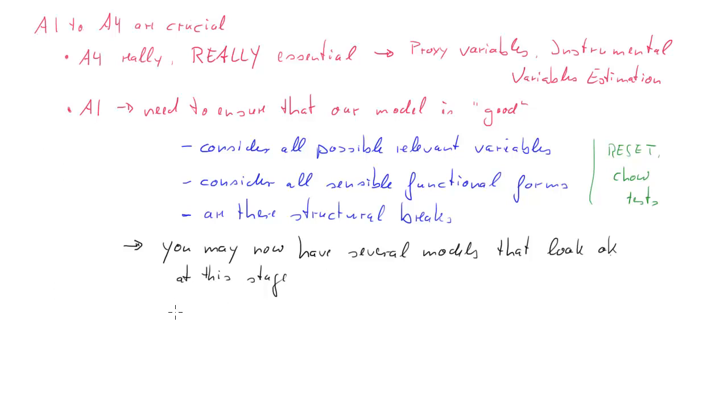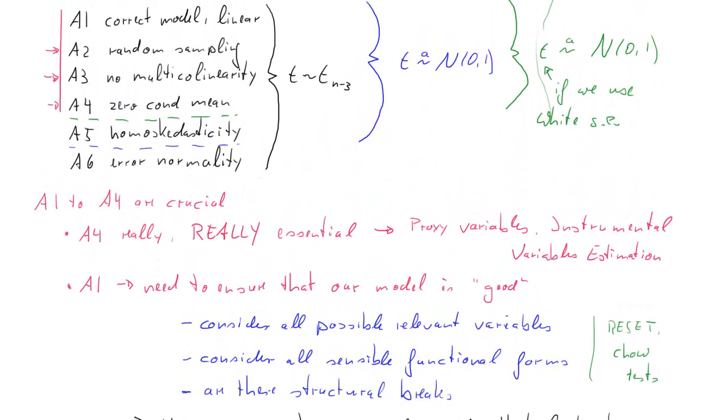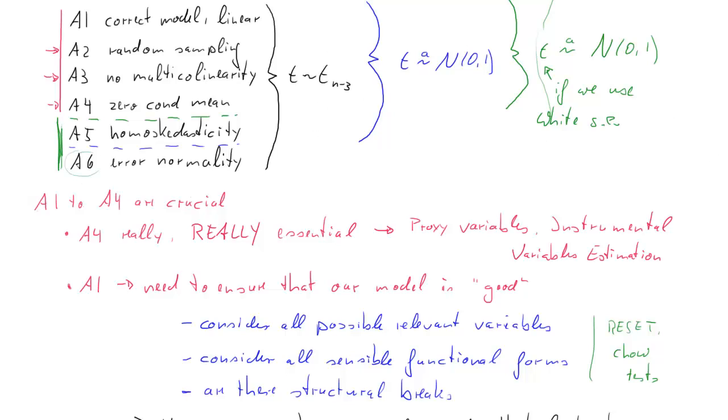It is at this stage that we can think back to what we really want to do, and that is performing inference on our estimated coefficients which have some economic meaning. So therefore we need to go back and look at our assumptions. We talked about A4, so now we're going to be concerned with A5 and A6.